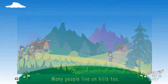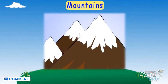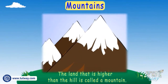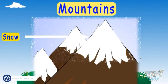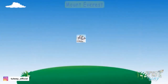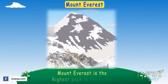Mountains: the land that is higher than the hill is called a mountain peak. Mountains are mostly covered with snow. Mount Everest is the highest peak in the world.